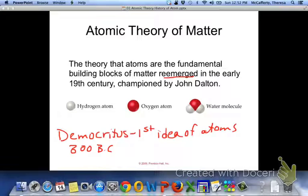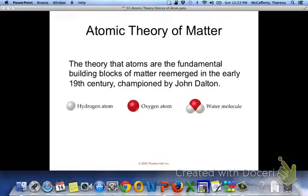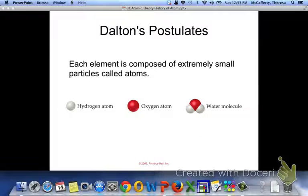But Democritus had this idea: if you took a sample of matter and you divided it in half, and you divided it in half again, and half again, and half again, eventually you would have the smallest particle that still maintained the identity of that matter, and he called that an atom. So in the early 19th century, this idea kind of re-emerged, and John Dalton kind of took the lead on it.